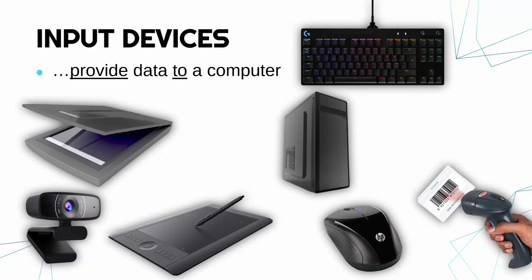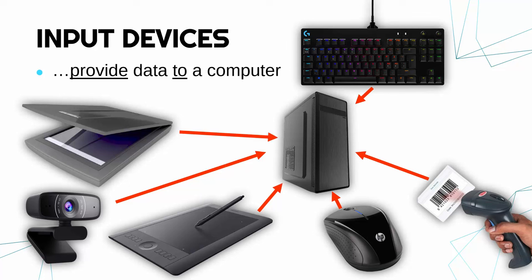A webcam is another good example, as is a graphics tablet. All of these, when they are used, primarily send data to the computer. Now, this is a bit simplistic — you might be thinking, well, actually, data is coming out of a computer too. For instance, this keyboard is quite a fancy one with different lights behind the keys. You might be able to, on the computer, control the lights on the keyboard, which would mean some data has to get sent from the computer to the keyboard. But primarily, their main role is to provide this data to the computer.